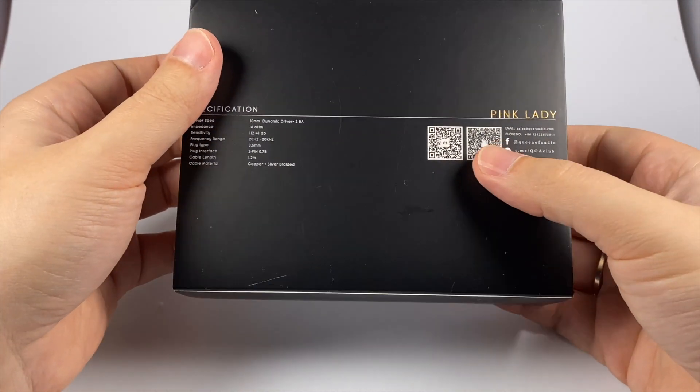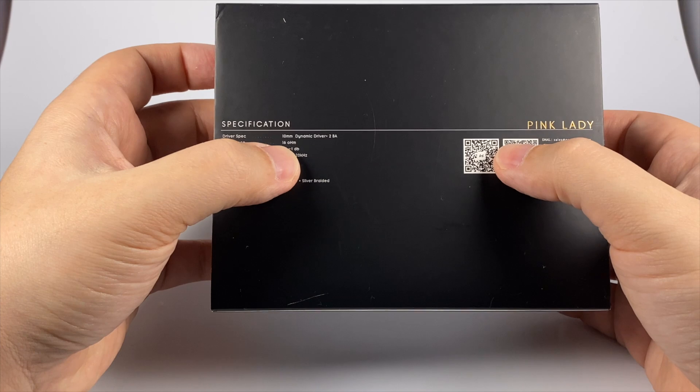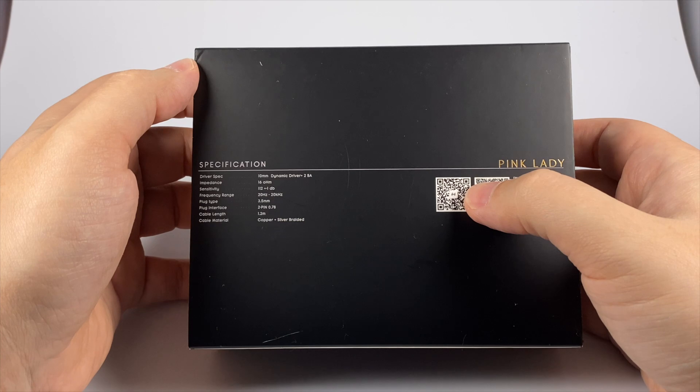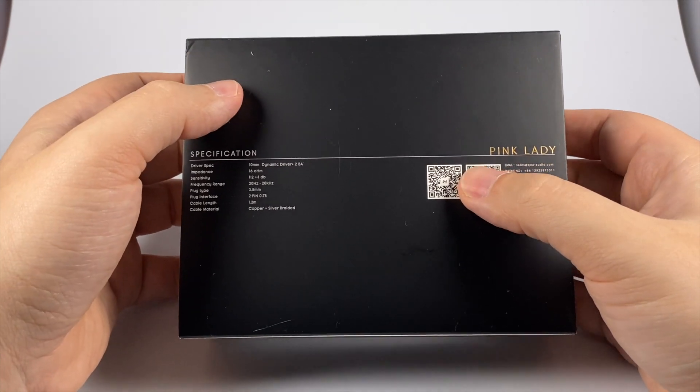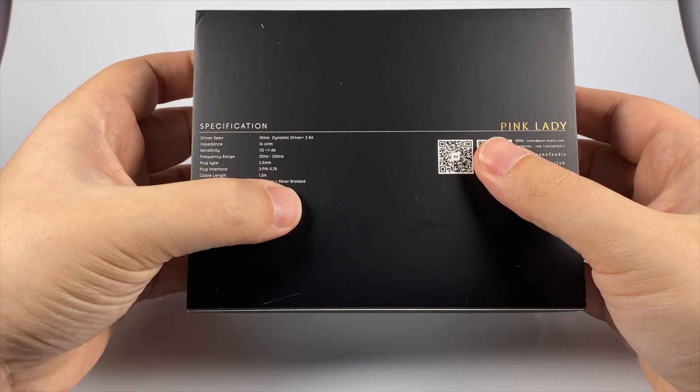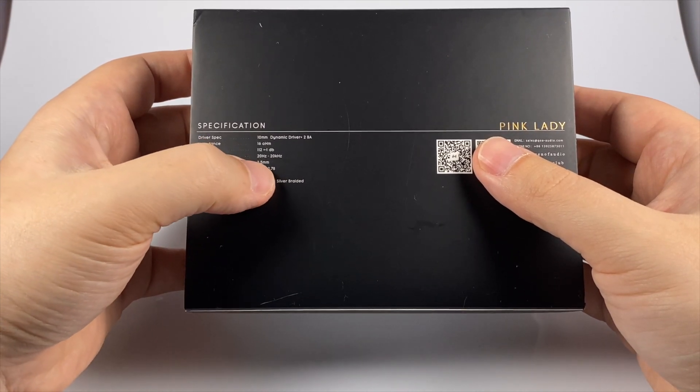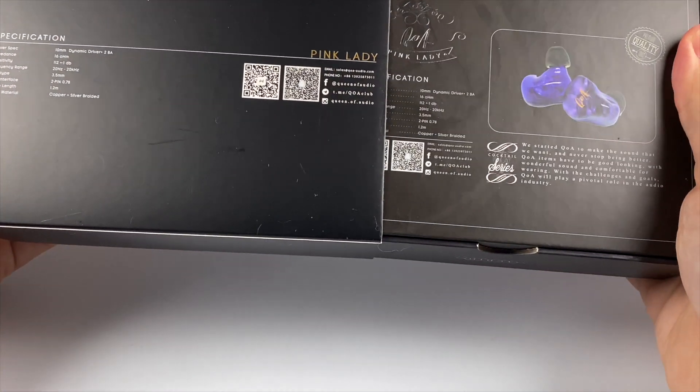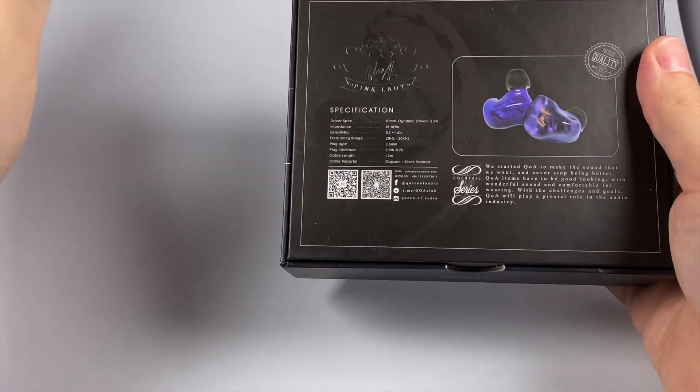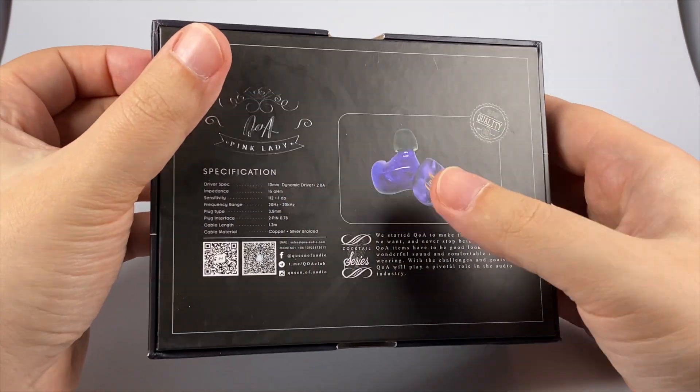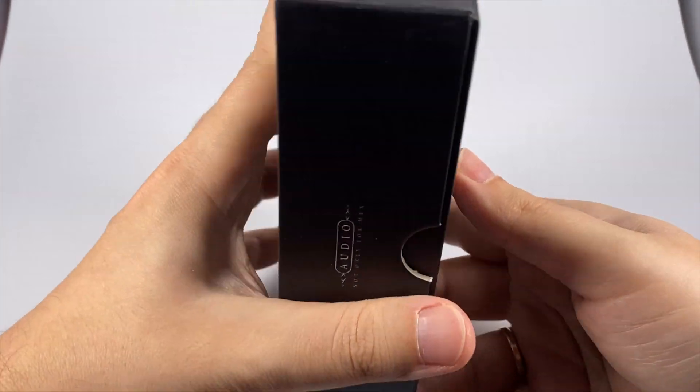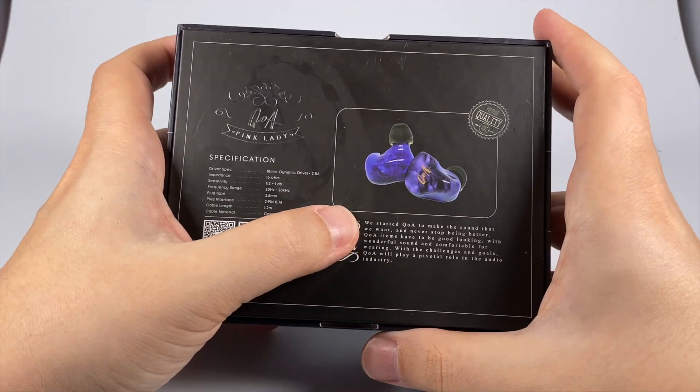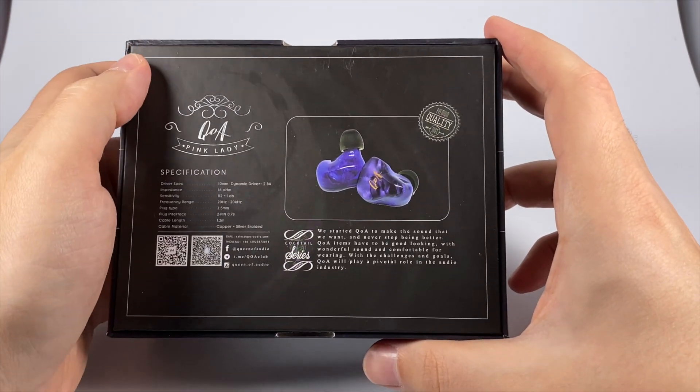Just basic polygraphy. Information: 16 ohms of impedance, 112 decibels of sensitivity, so a bit on the sensitive side, but still not super sensitive. Copper plus silver braided cable, two pin 0.78 millimeter connector, so everything is pretty traditional. Inside of the cover, there is another box with more polygraphy. Also specifications are printed here, and actually you can see that some ideas of design that is common for the Kinera is used here too.